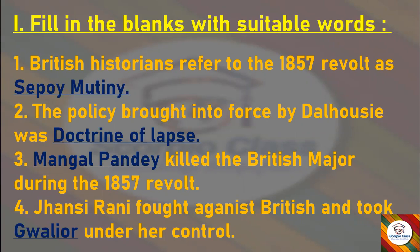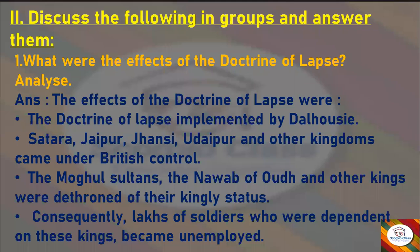Now let's go to the second main section — answer the following questions. The first question is: What were the effects of the Doctrine of Lapse? Analyze. Answer: The Doctrine of Lapse implemented by Dalhousie brought Satara, Jaipur, Jhansi, Udaipur and other kingdoms under British control. With this policy the Mughal sultans, the Nawab of Awadh and other kings were dethroned. Consequently, lakhs of soldiers who were dependent on these kings became unemployed.